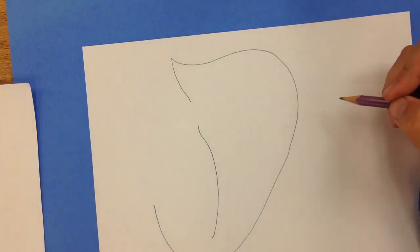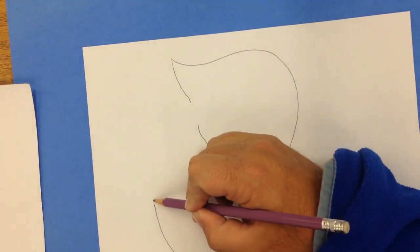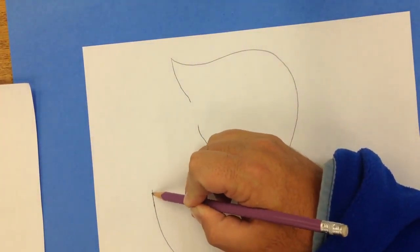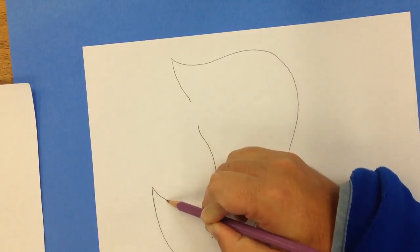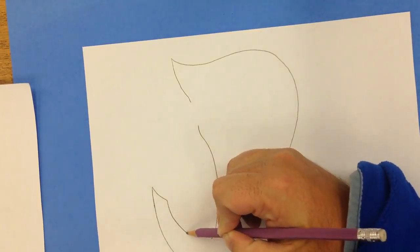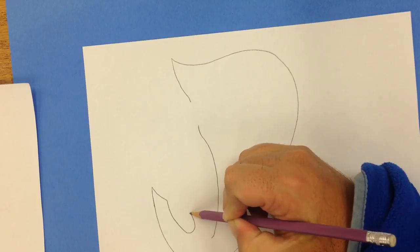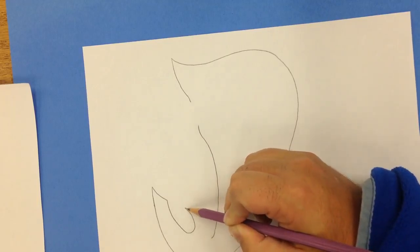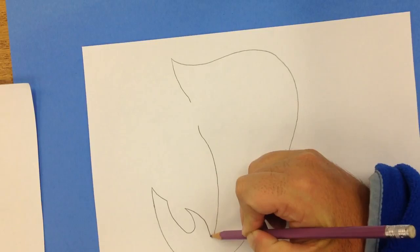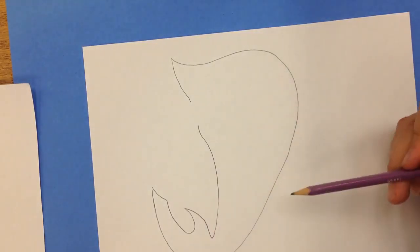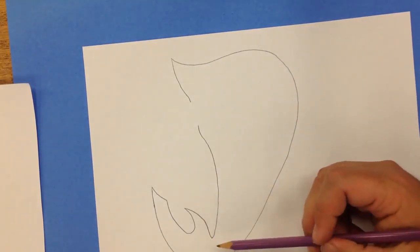Next thing I'm going to do is go back to the end of this line where the tail is. I'm going to draw a little notch here, and then bring up the other side of the tail fin like this. So we have the outline of the shark's body connected to the tail.